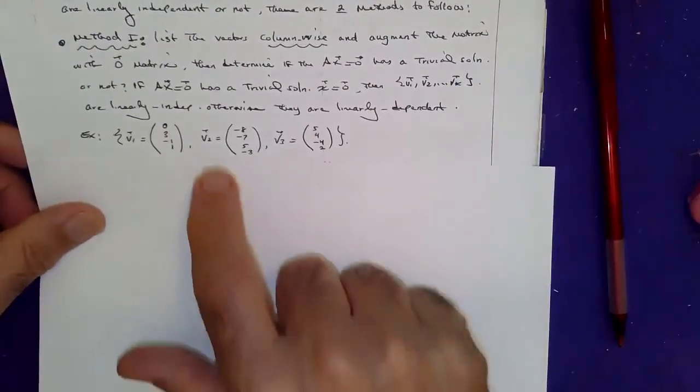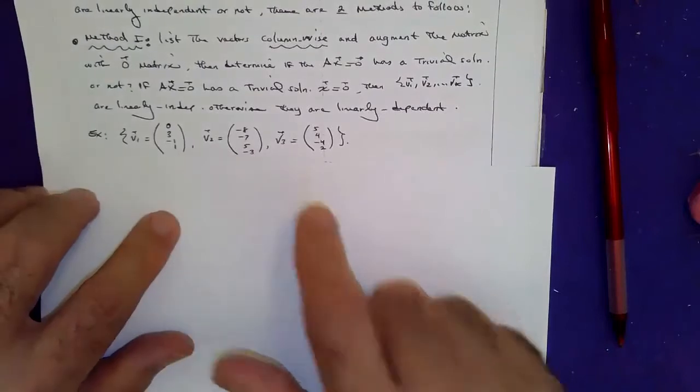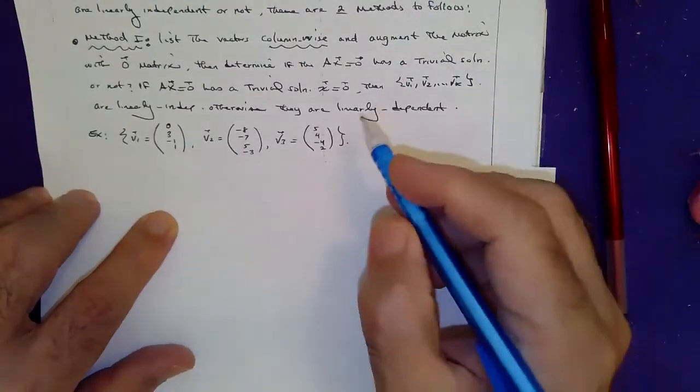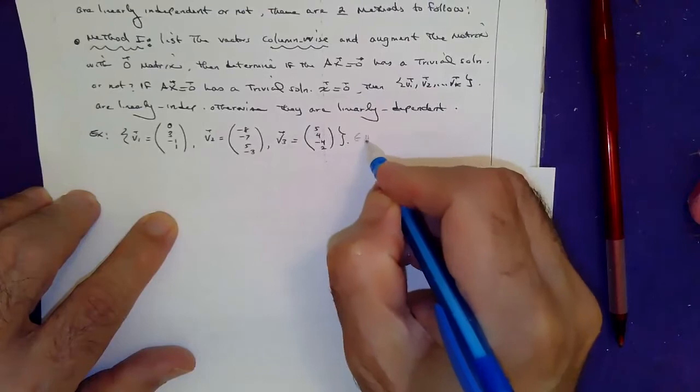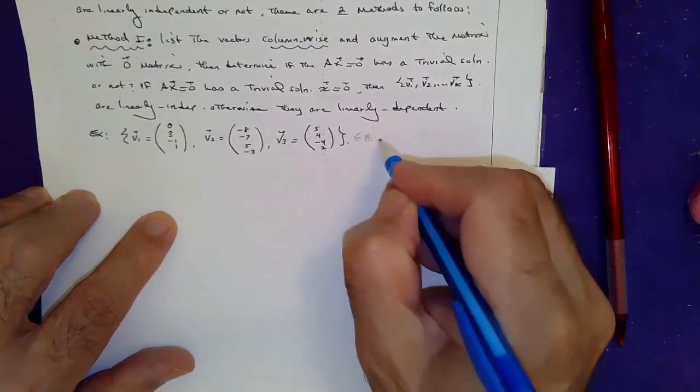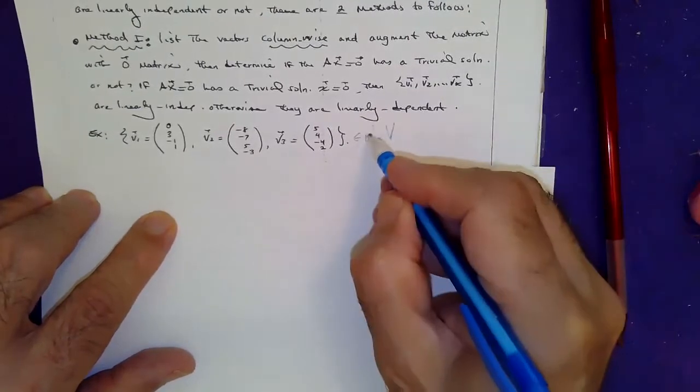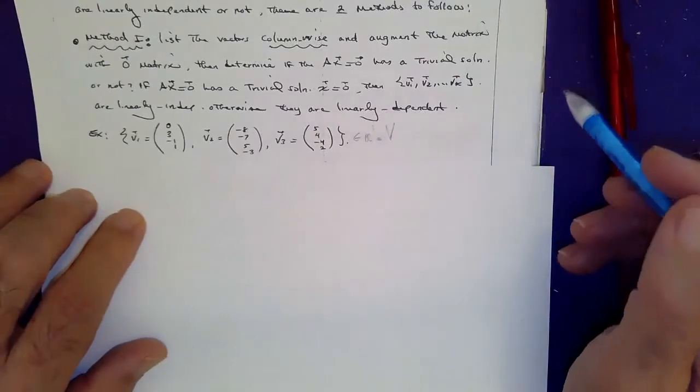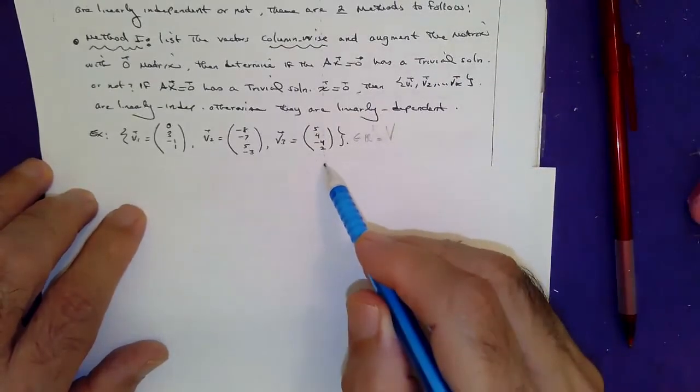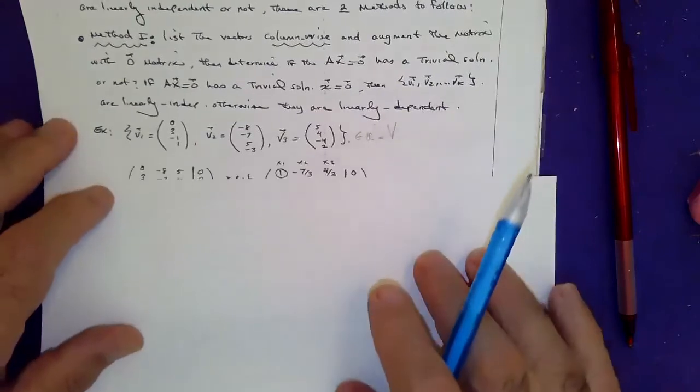Suppose I'd like to know whether these three vectors, of course in R3... that means the vector space is a three-dimensional space, correct? Are they linearly dependent or independent? So here's what you do.